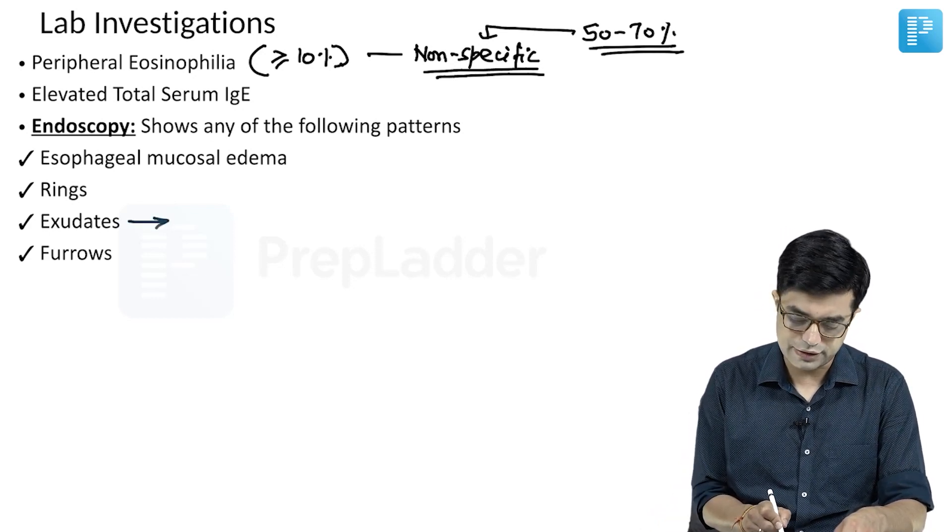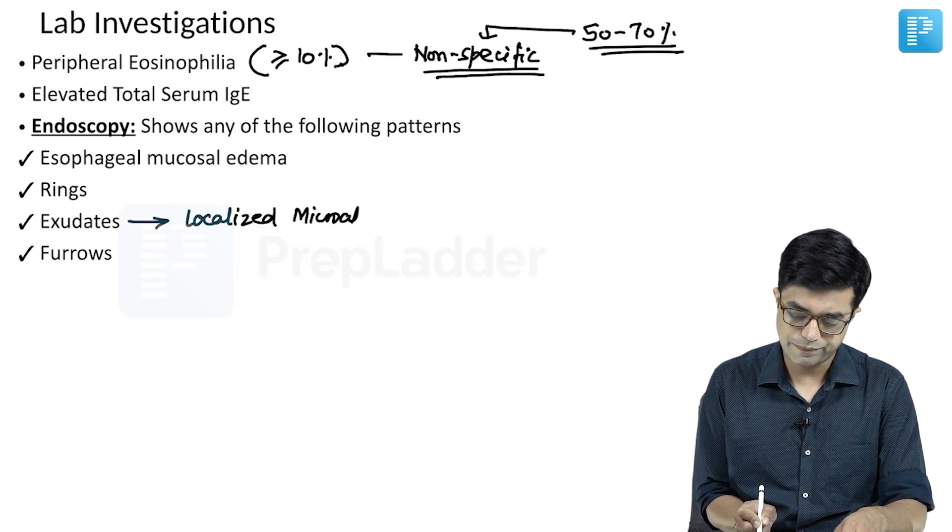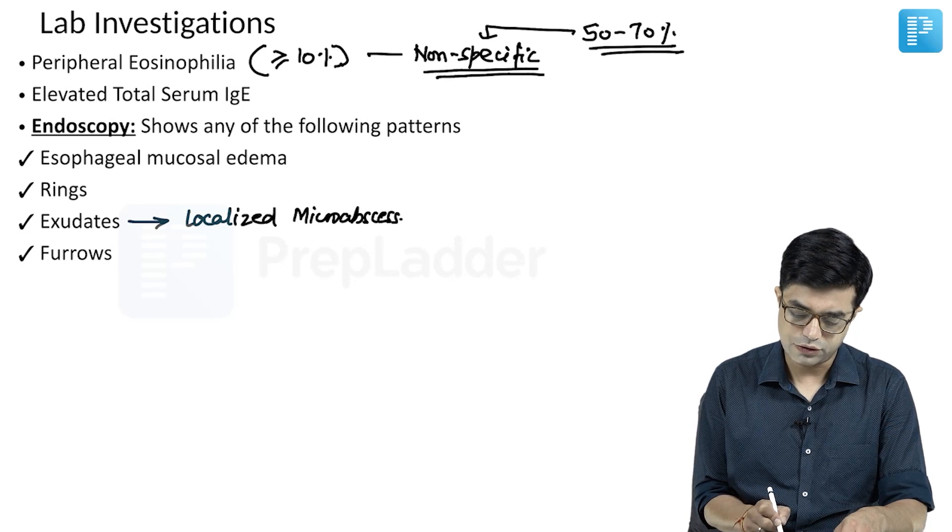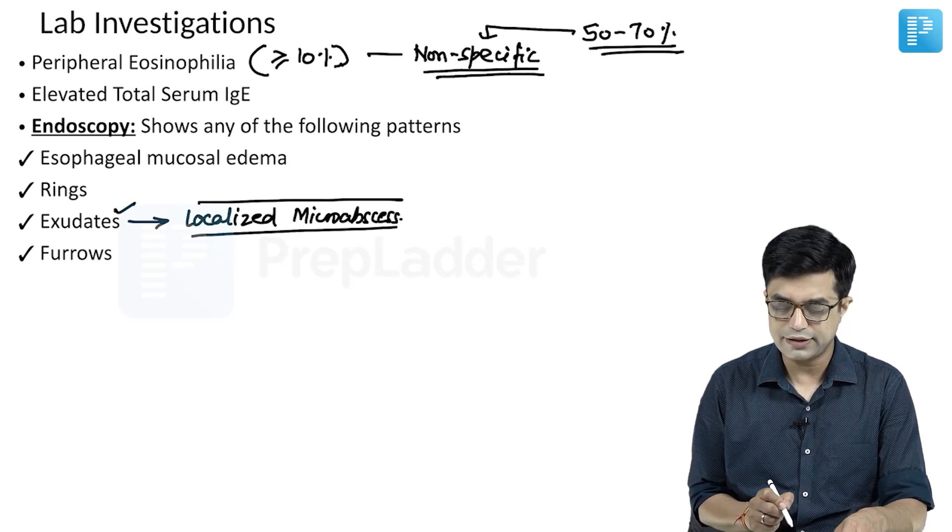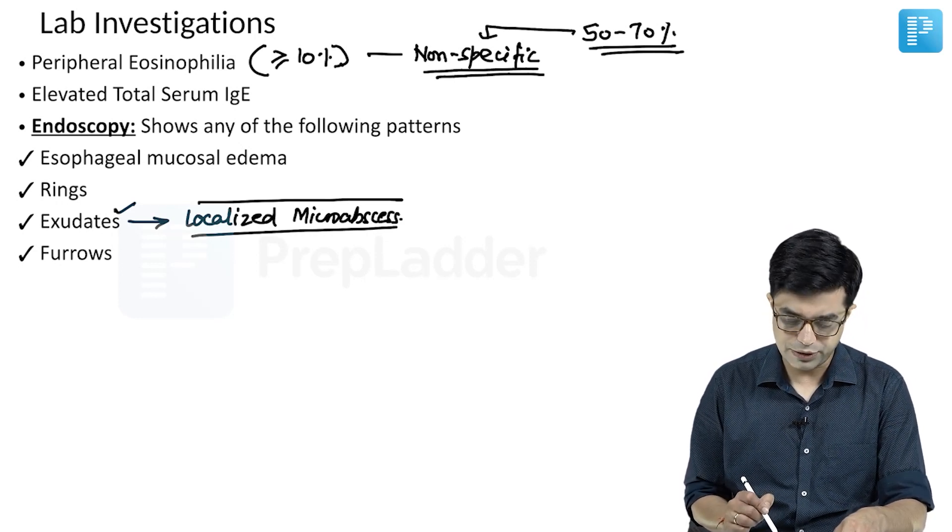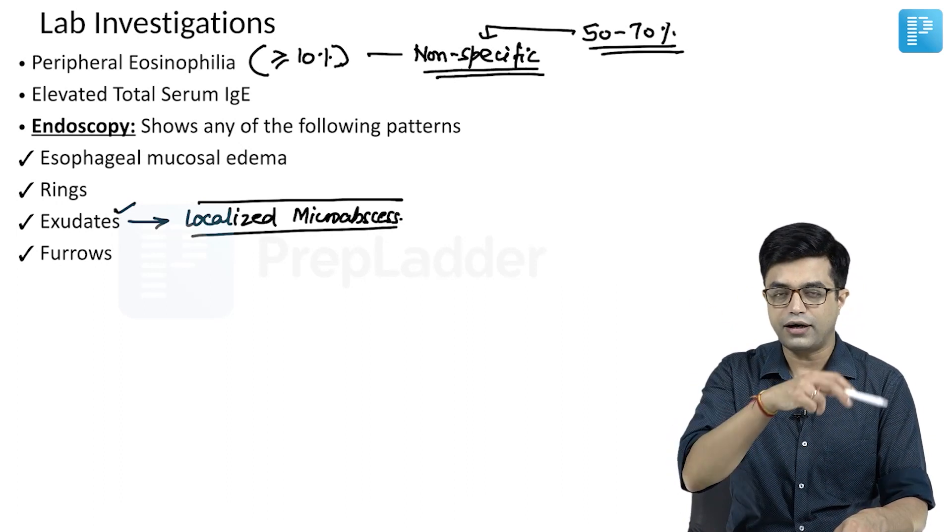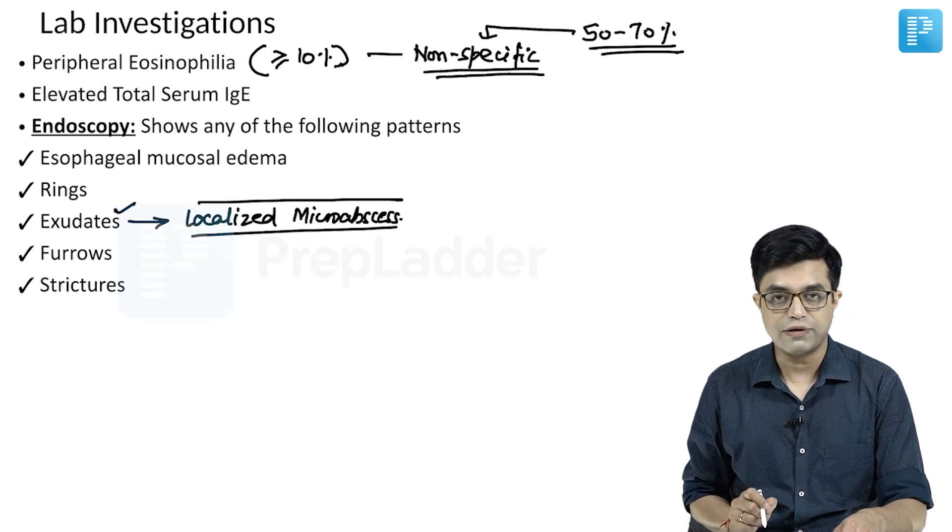Exudates are also called localized micro-abscess formation. You may have furrows, which are linear patterns, while rings are along the entire circumference. Strictures are seen in long-standing cases.